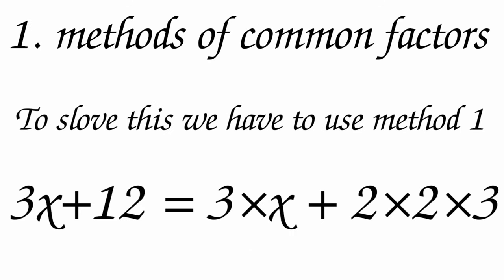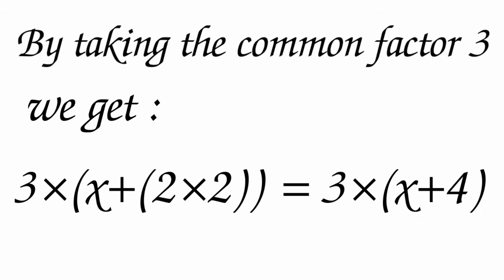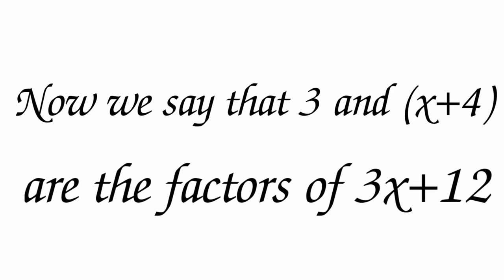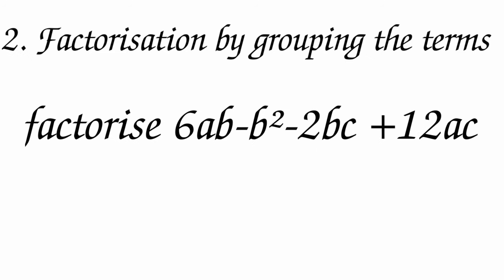Let us factorize the algebraic expression 3x + 12. To solve this, we use Method 1. Writing each term as the product of irreducible factors: 3x + 12 = 3·x + 2·2·3. By taking the common factor 3, we get 3(x + 4). So 3 and (x + 4) are the factors of 3x + 12.